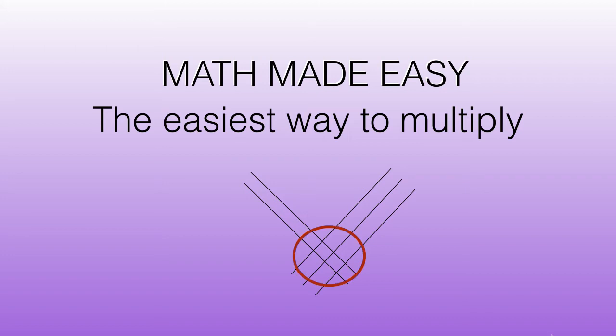All we have to do then is count the hit points to get the correct answer. So 1, 2, 3, 4, 5, 6 — 2 times 3 equals 6 and that is the correct answer.